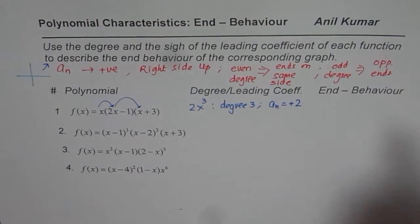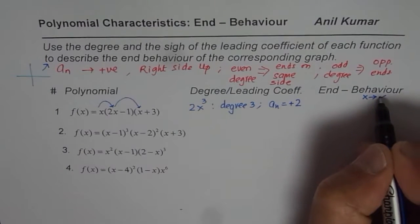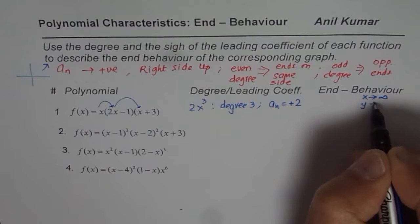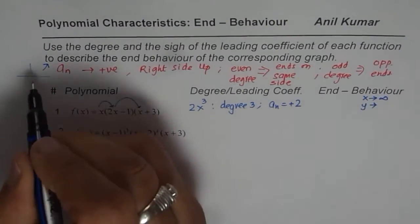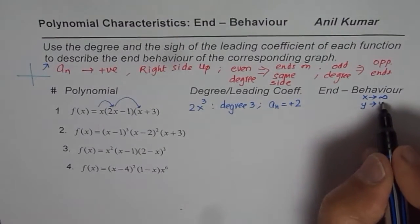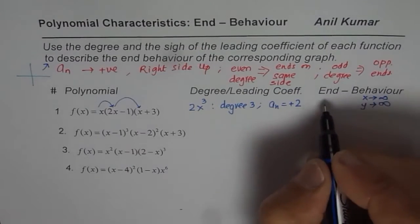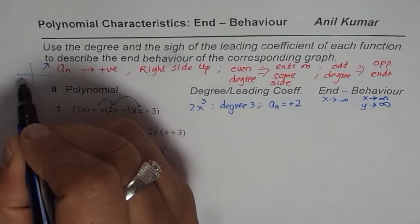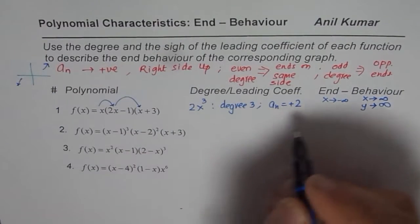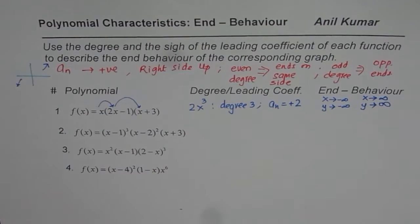From here we can write the end behavior. Degree 3 means odd. Since the leading coefficient is positive — right side up — when x approaches positive infinity, y approaches positive infinity. Since the degree is odd, we look for opposite ends, so when x approaches negative infinity, y approaches negative infinity.